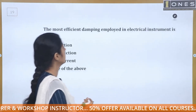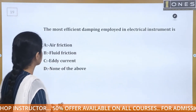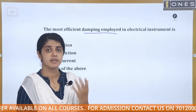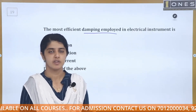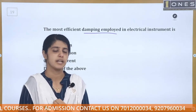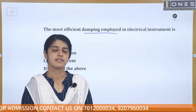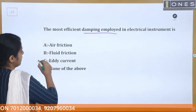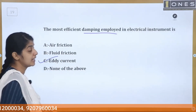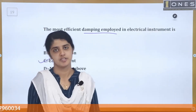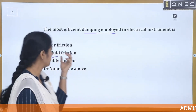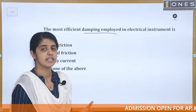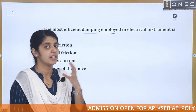The most efficient damping employed in electrical instruments. There are different methods: air friction damping, fluid friction damping, and eddy current damping. The most efficient damping is eddy current damping. We would not use fluid friction or air friction because eddy current damping is the most efficient.